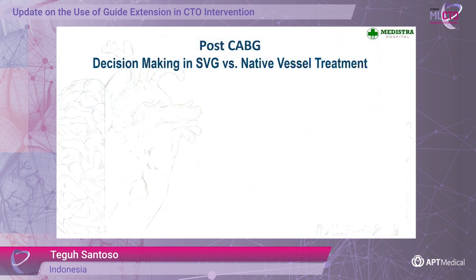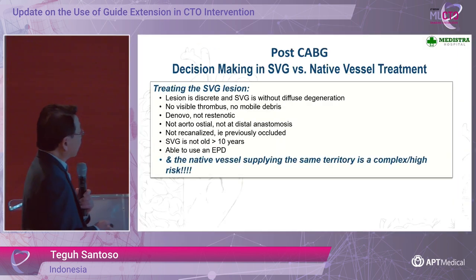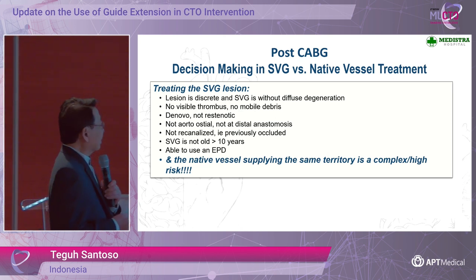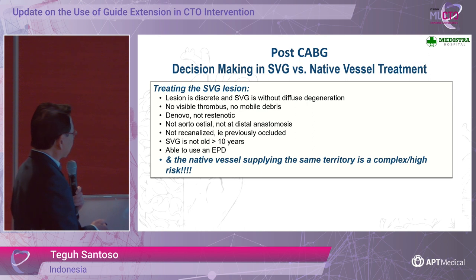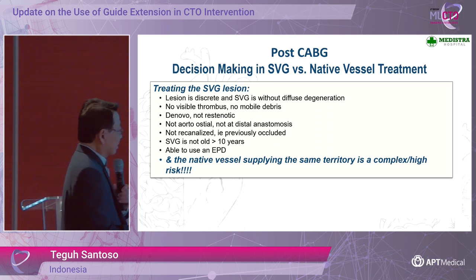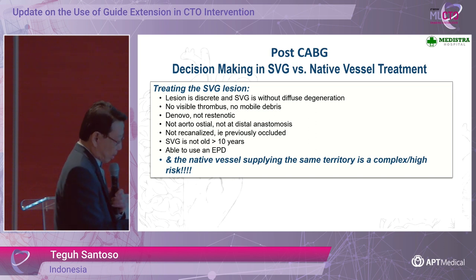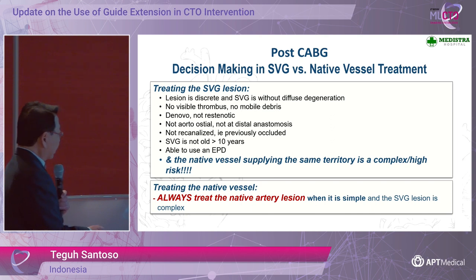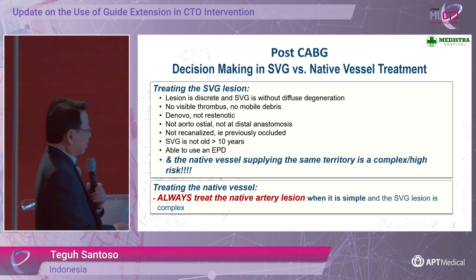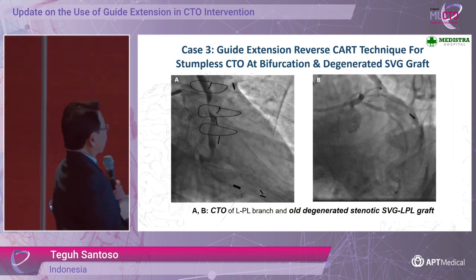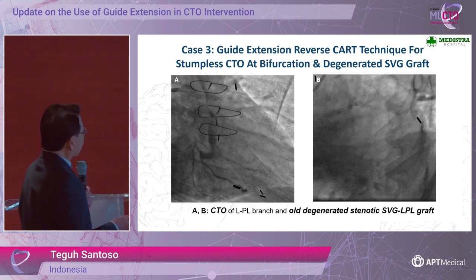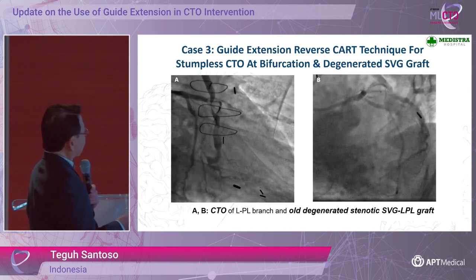Using two guiding catheters is another option. In post-CABG patients with SVG lesions, if the lesion is simple — discrete, without diffuse degeneration, no visible thrombus, no mobile thrombi, not ostial, not at distal anastomosis, SVG not too old — and the native vessel supplying the same territory is complex or high risk, we can treat the SVG lesion. Otherwise, it is always better to treat the native coronary artery. This is a case where we used a guide extension reverse CART technique for a stumpless CTO, bypassed via a degenerated vein graft.